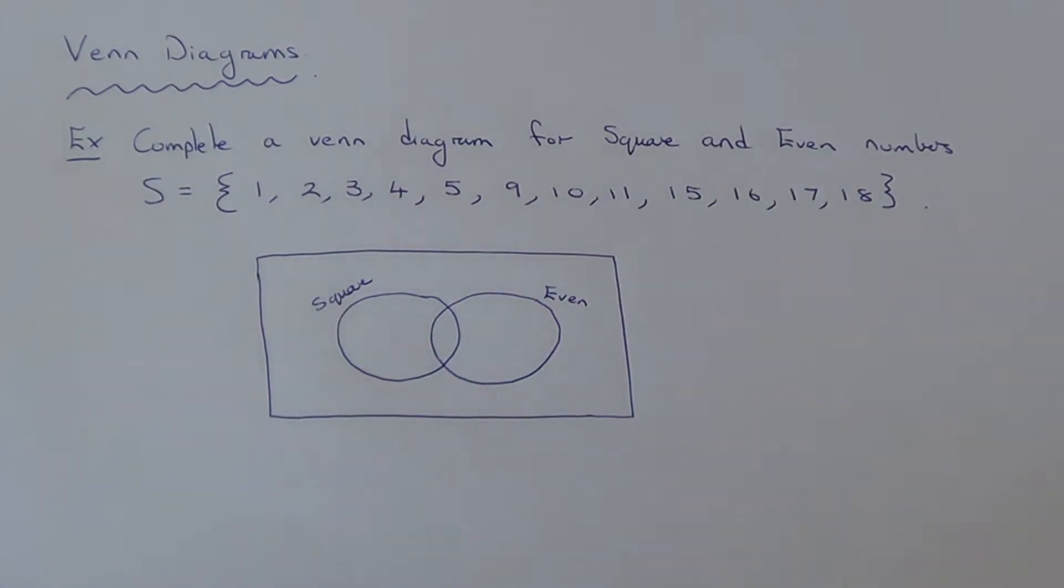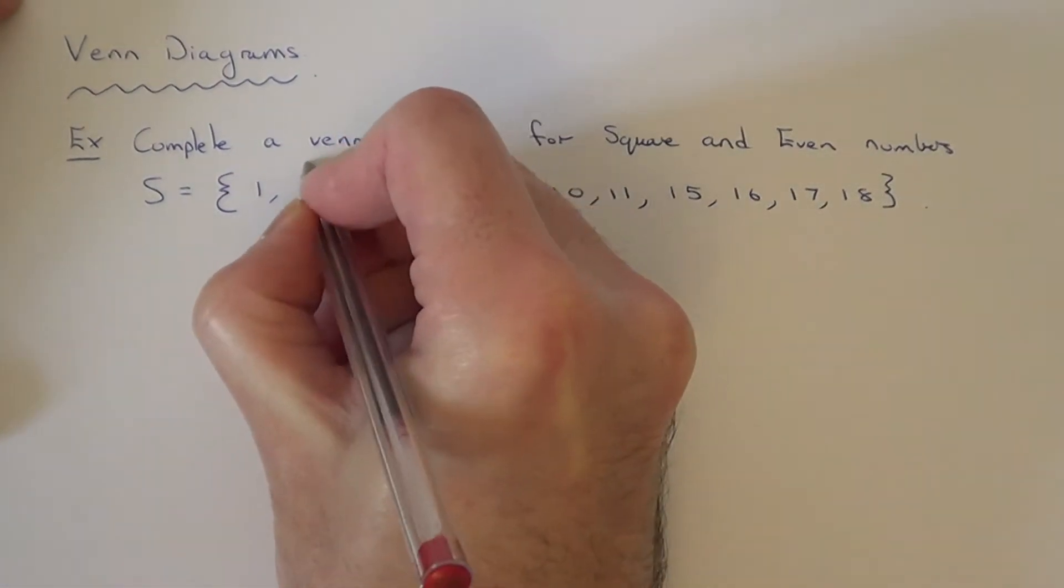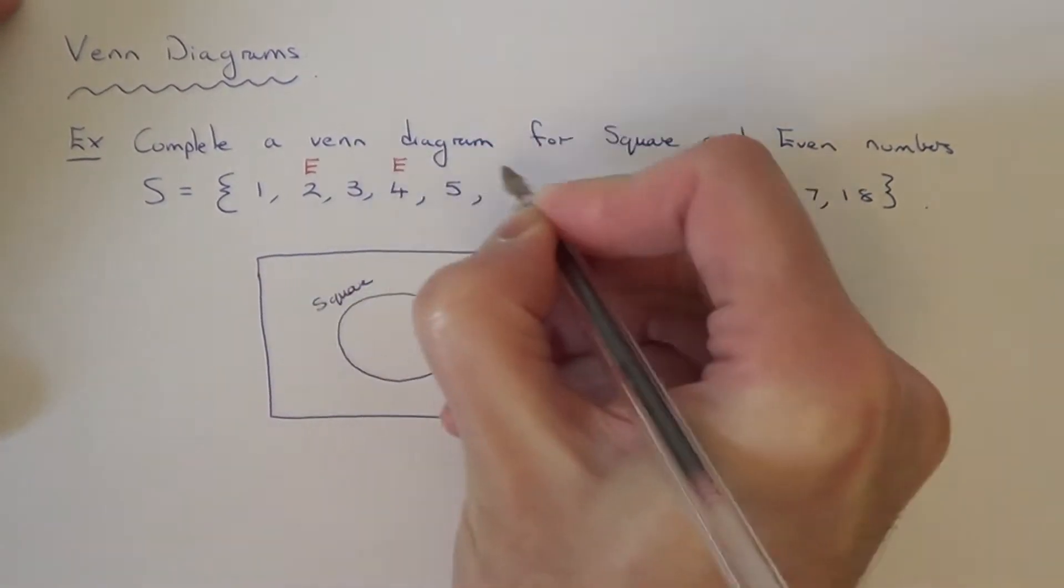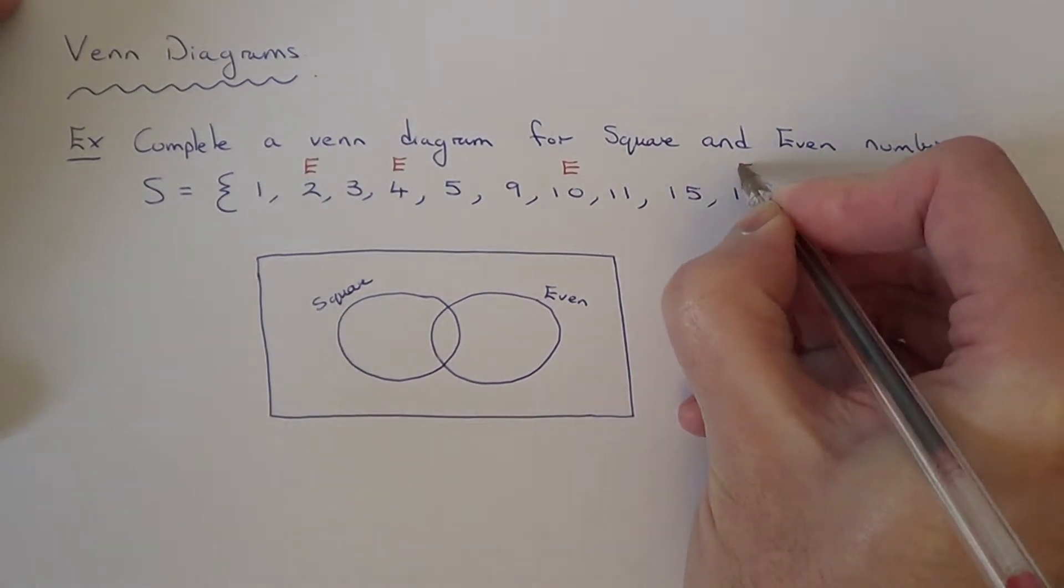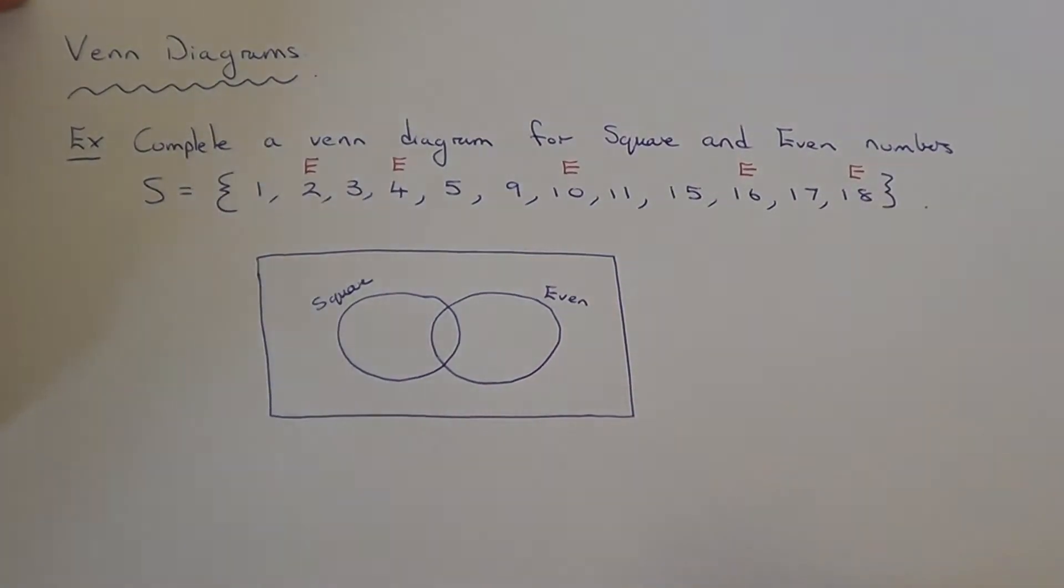So before we start it's probably easier just to mark out your square numbers and your even numbers. Let me just quickly do the even numbers first because they are much easier to do. So 2 is an even number, 4 is an even number, 10 is an even number, 16 is an even number, and we've got 18, also an even number.